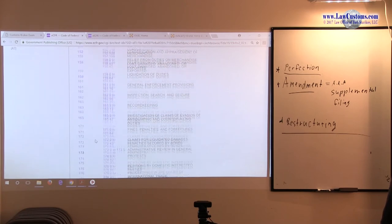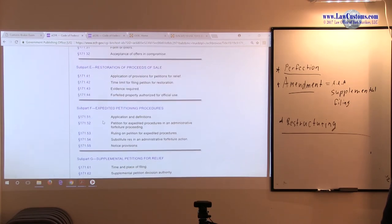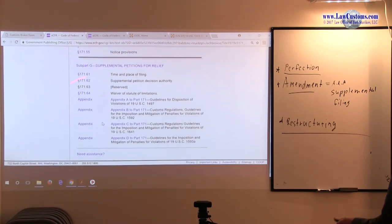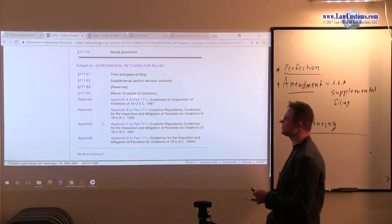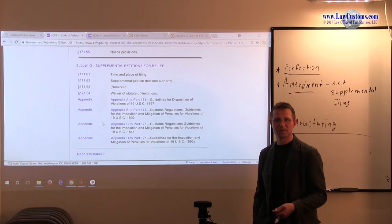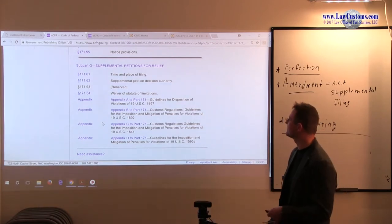So, 171 is a part that deals with Find Penalties in Four Features. And at the end we have an Appendix, heavily tested Appendix 1592 Appendix B. 1497 is the one that deals with the mischievous licensed customs broker who did some violations under the color of their license. This one, I am sorry, that is 1641.